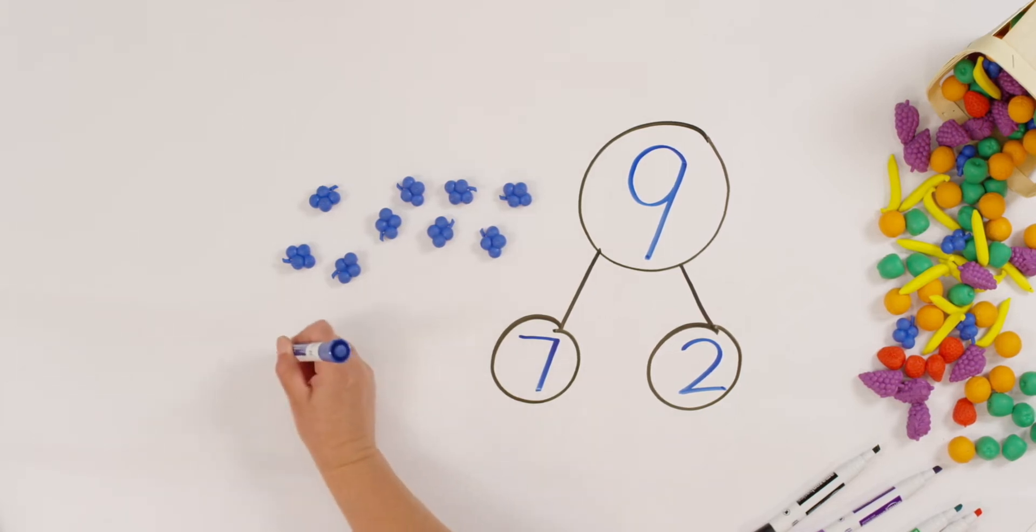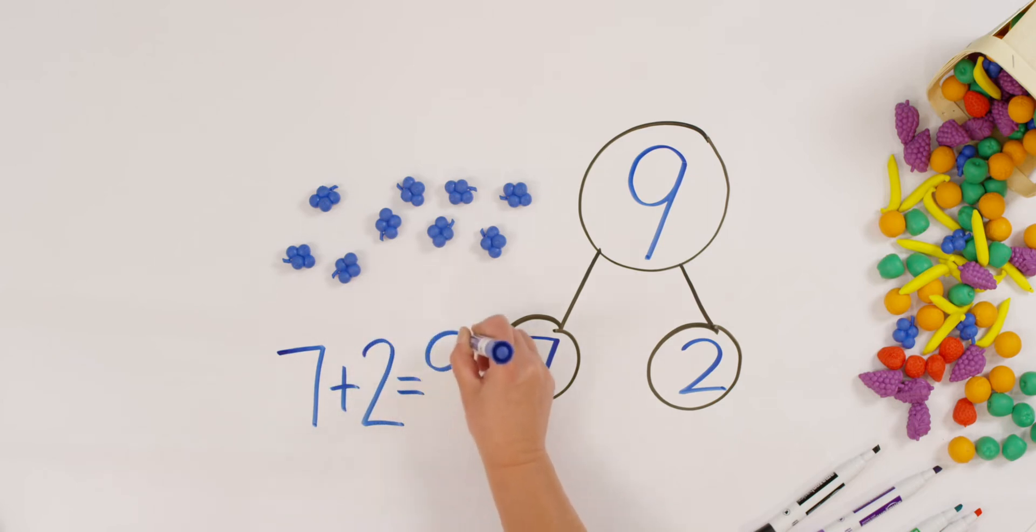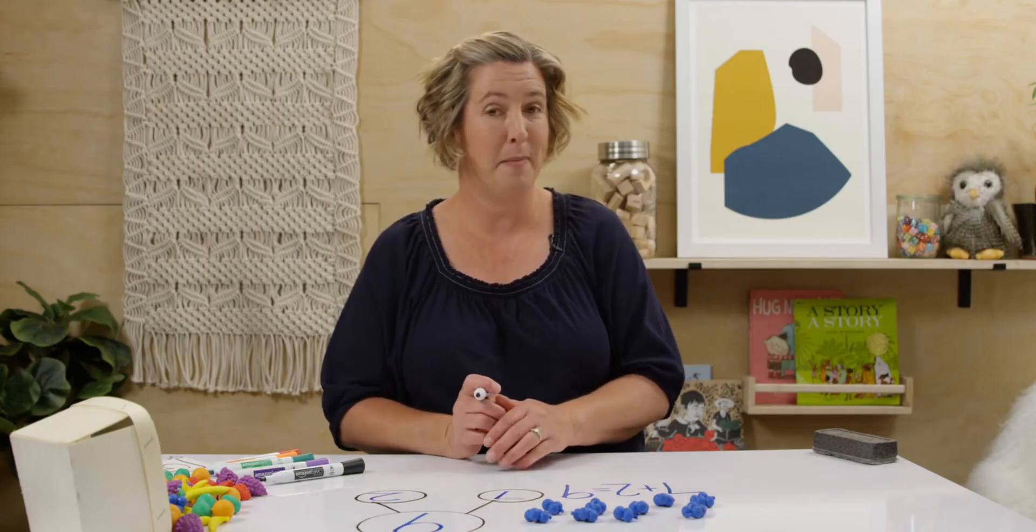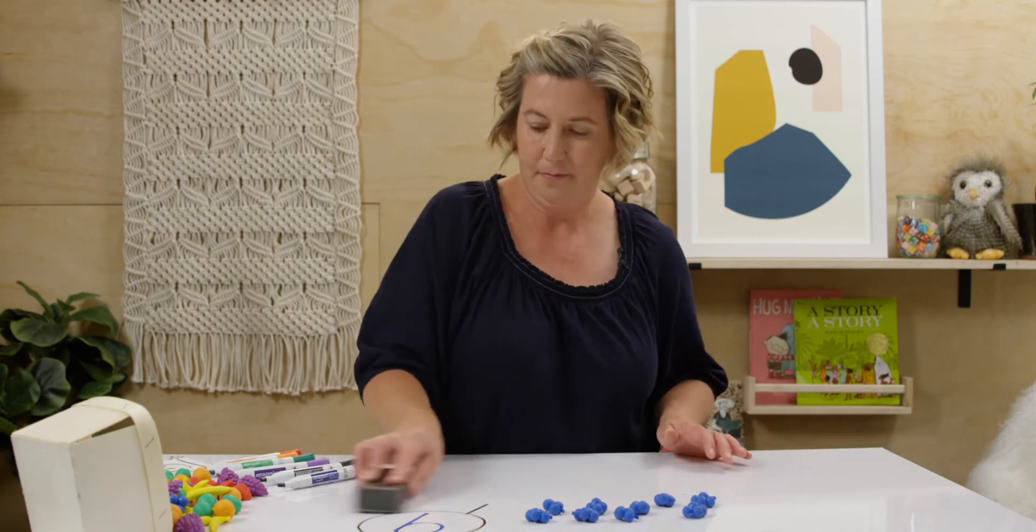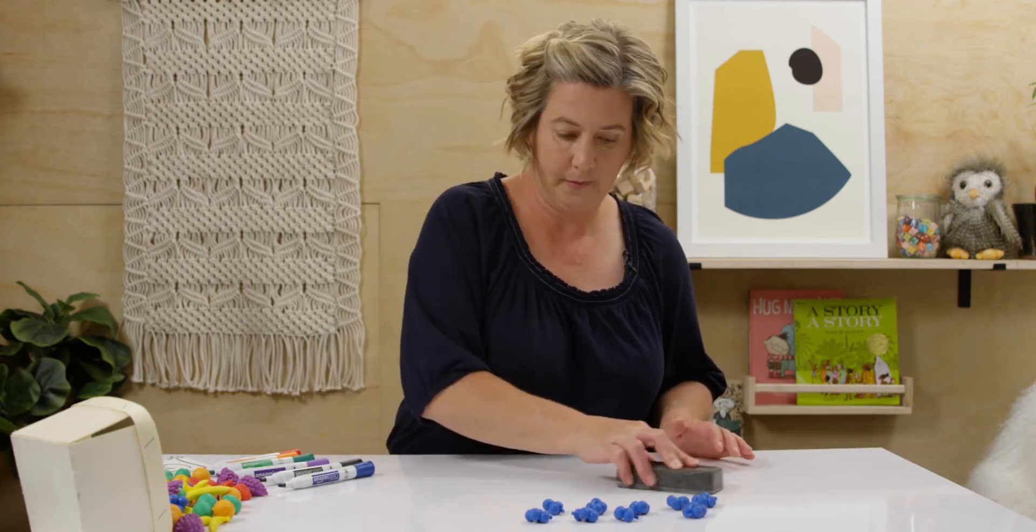Let's show that with an addition sentence. I'll write it right here so you can see. Seven plus two more makes nine. Not bad, huh? Let's try it one more time. I'm going to erase my board and you can clear your space. And this time get two different types of counters. Okay. Here are mine.